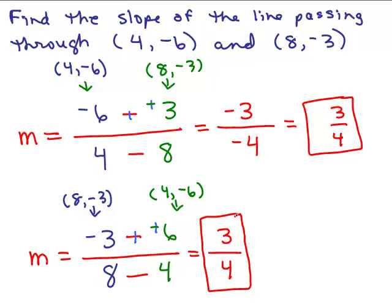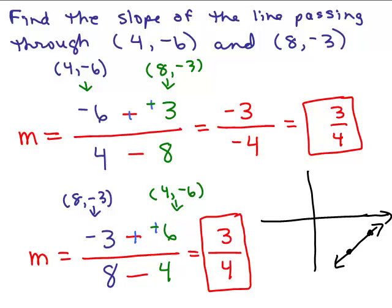You can also get a little picture to see if the answer seems reasonable. Where is (4, −6)? Over 4 and down 6. And (8, −3) is further to the right and not as far down. Graphing that, I can see it's slanting in the positive upward direction, so it should be a positive slope — 3 fourths seems reasonable. If you plot those points exactly and do rise over run, you also get a slope of 3 fourths.